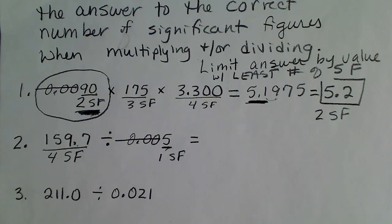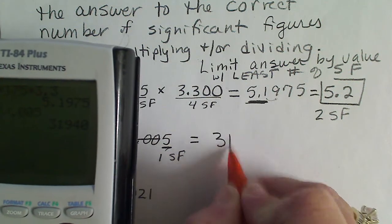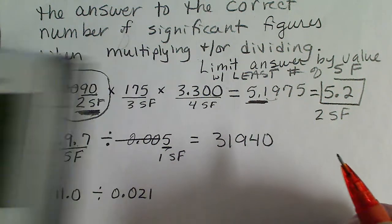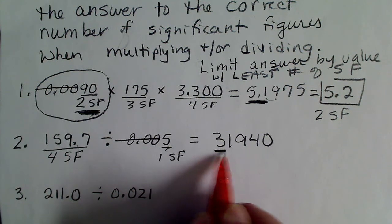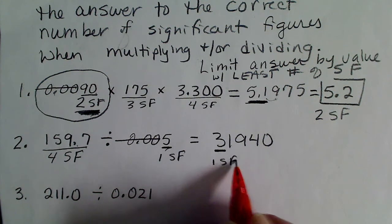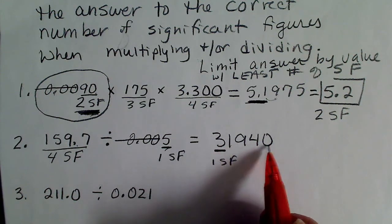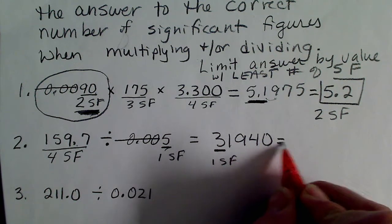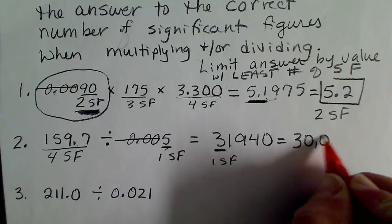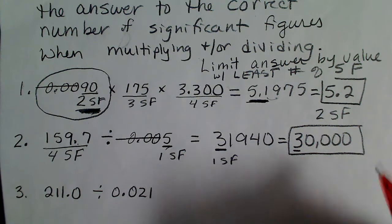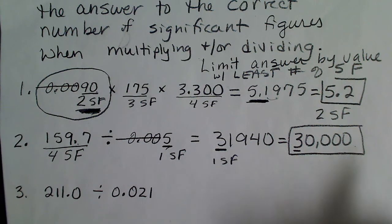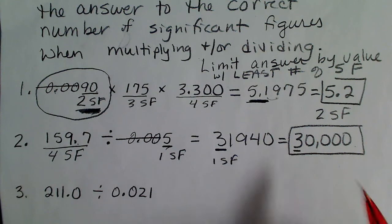If we take 159.7 and divide that by 0.005, we'll get 31,940. In this case we're only allowed one significant figure, so we can change all of these placeholders to zeros and call that 30,000. That would be a correct way of reporting that number, as long as we do not put a decimal at the end — then it only has one significant figure.